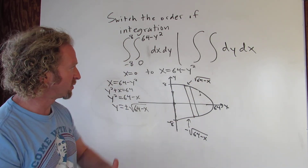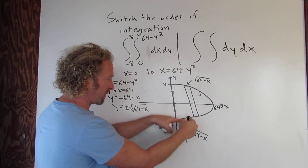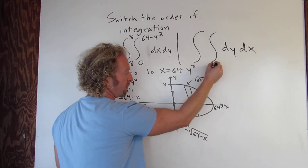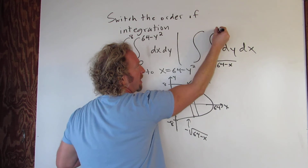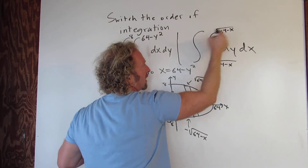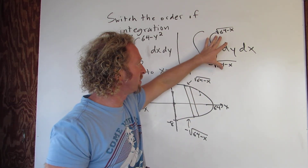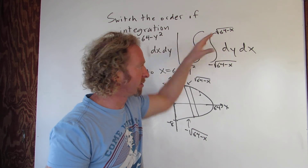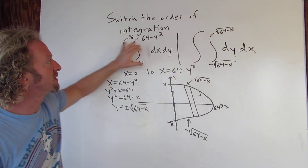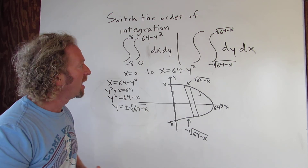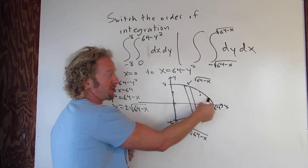Now let's write the switched integral. First we integrate with respect to y, going from negative square root of 64 minus x to positive square root of 64 minus x. The outer limits of integration are always constants, and the inner ones are always variable terms. Then we integrate with respect to x from 0 to 64.